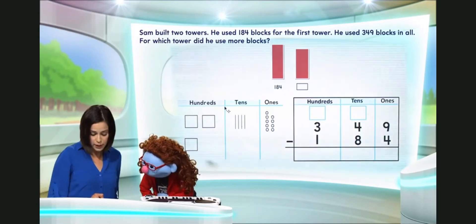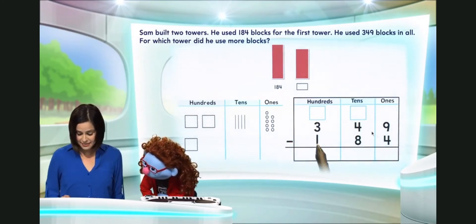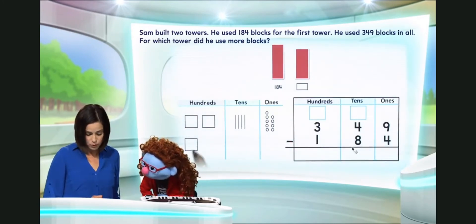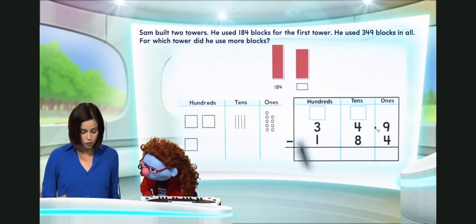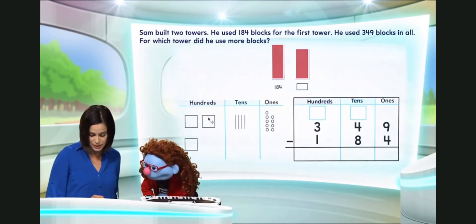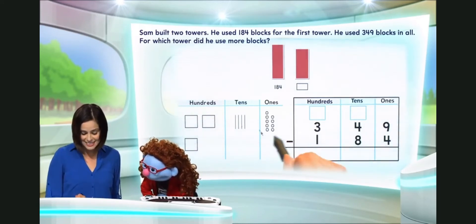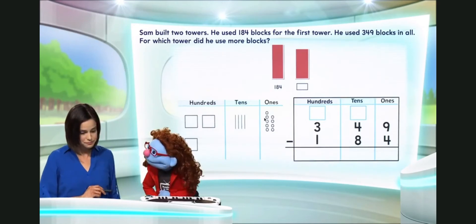Now, let's use our quick picture to represent these numbers. We have 349. Here we have three hundreds, four tens, and nine ones. Got it.